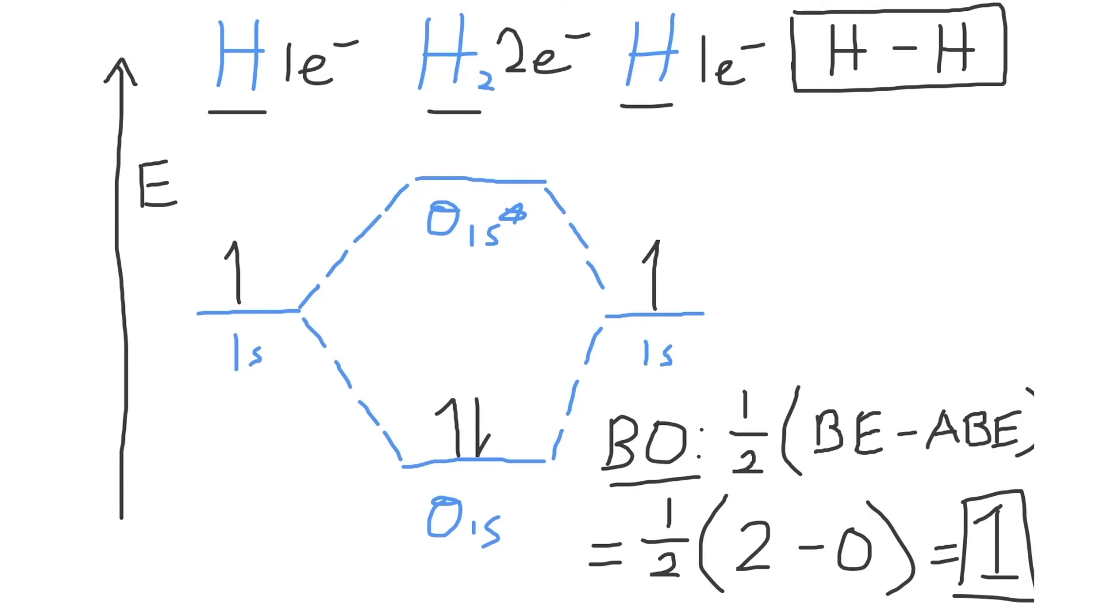If there are unpaired electrons, then it would be paramagnetic, which means that it is weakly attracted to an external magnetic field. So we can mark down that H2 is diamagnetic due to the presence of only paired electrons, and this means that it is repelled by an external magnetic field.